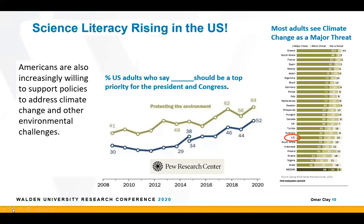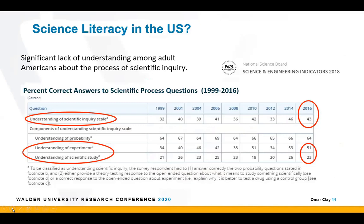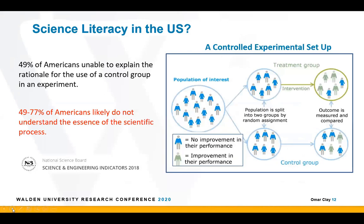As Americans become more aware of these subjects, they become more aware of potential harms associated with climate change, and people are also beginning to prioritize climate policies. This puts the United States in closer connection with what we're seeing internationally. But where Americans continue to really have trouble with science literacy is our understanding of the process and even the motivation of scientific inquiry. A good example: 49% of Americans are unable to explain the rationale for the use of a control group in an experiment.